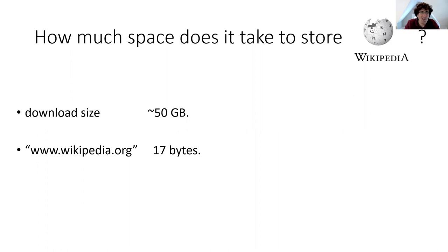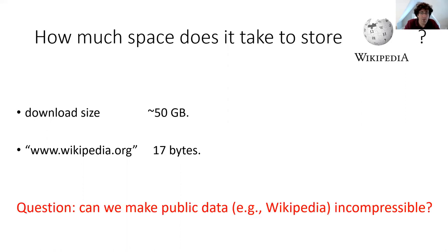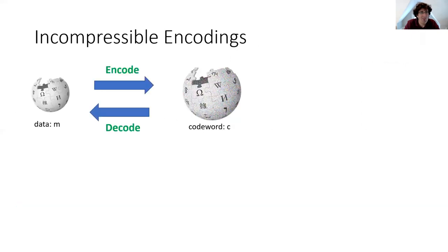With this link, you can access the Wikipedia data whenever you want. The point I want to make is that when it comes to some public data like Wikipedia, even though the data can be very large, just by storing the link you can essentially have this data for free without storing it. And the question for this work is: can we take such public data — say the entire Wikipedia contents — and make it incompressible? Can we come up with a representation of the Wikipedia data that would require 50 gigabytes of storage, even for people that have the link to the underlying Wikipedia data and have access to it for free? Let me make this precise by defining the notion of incompressible encodings.